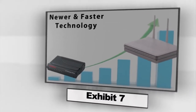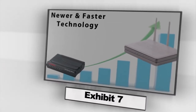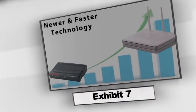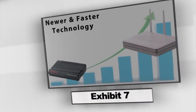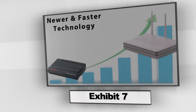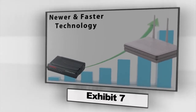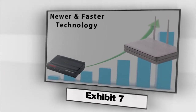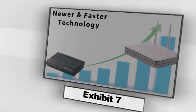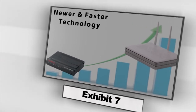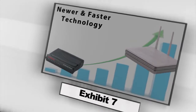56K modems and the providers who supported them spread widely for a while, but this was the low end. 56K was not fast enough to carry multimedia such as sound and video. This is when newer and faster technology emerged, such as cable modems and digital subscriber lines, DSL.